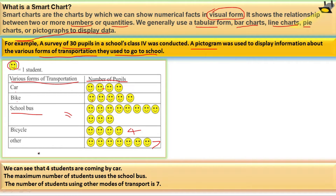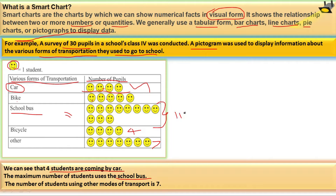We can see that 4 students are coming by car. The maximum number of students use the school bus — you can see nearly 11 students use the school bus. The number of students using other modes of transport is nearly 7 students.